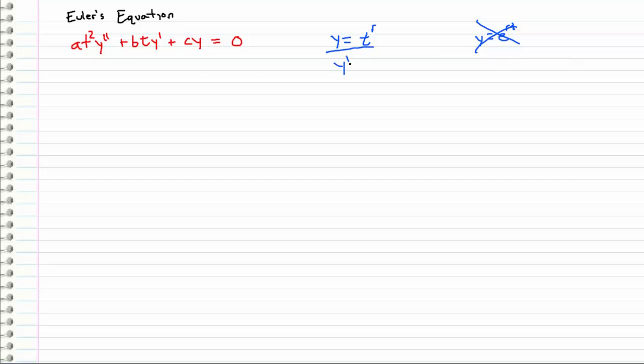So if I were to differentiate this I get r times t to the r minus 1, and if I differentiate it again I get r minus 1 times r times t to the r minus 2. So let's go ahead and plug these three equations back into our differential equation. We get a t squared r minus 1 times r times t to the r minus 2 plus b t times r t to the r minus 1 plus c times t to the r, and all this has to equal zero because we are still homogeneous right here.